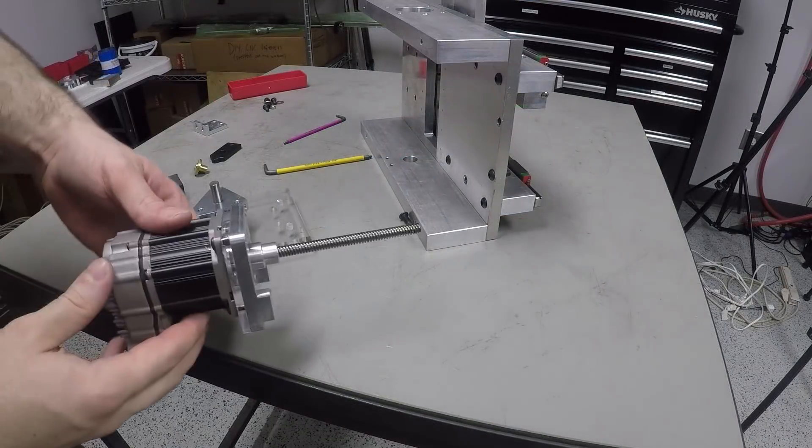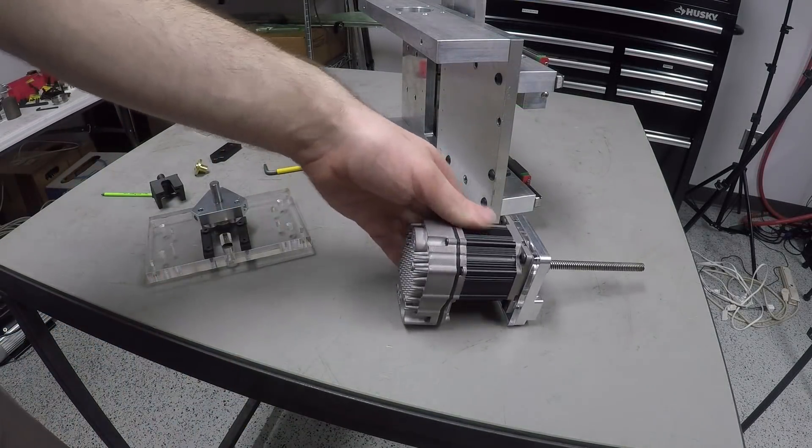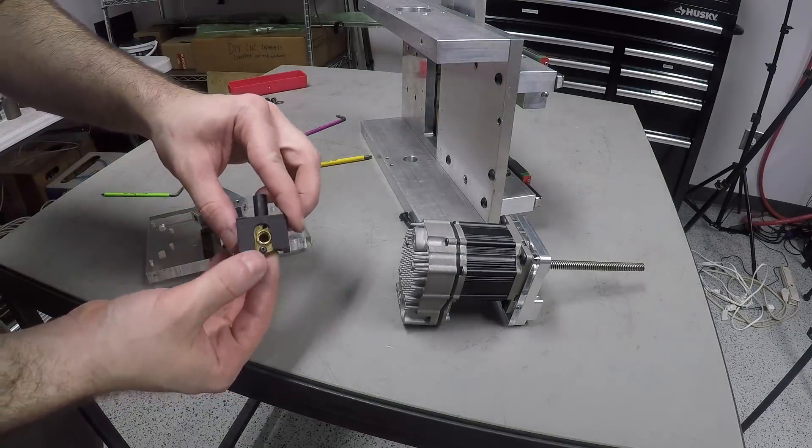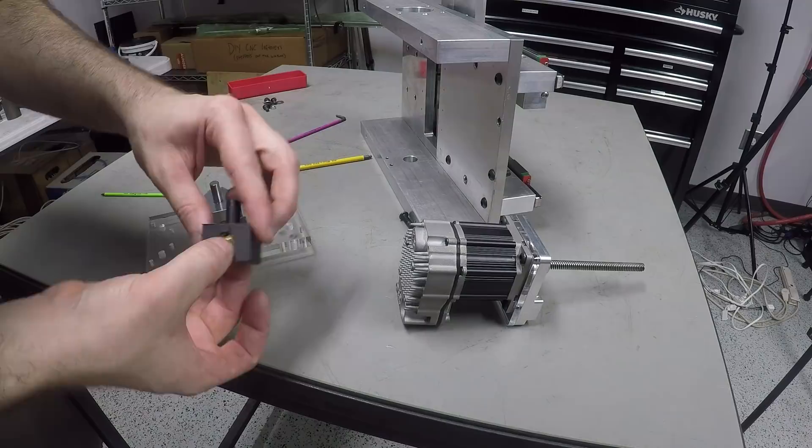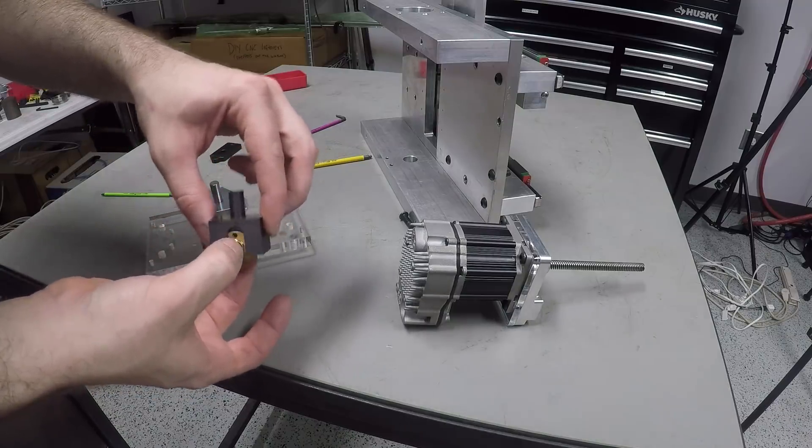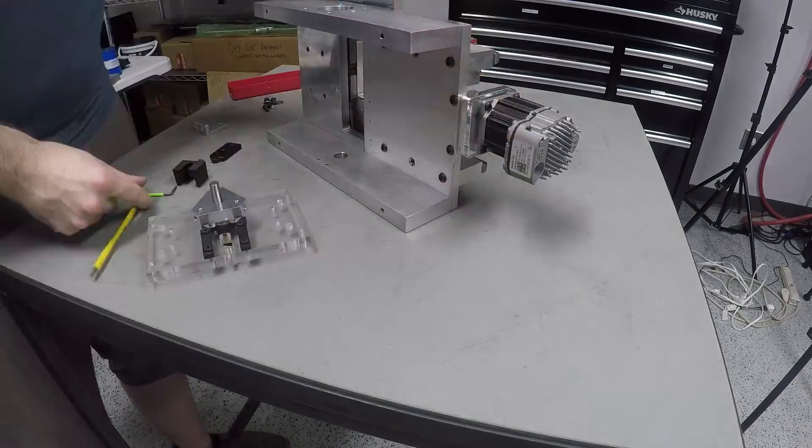The Z-axis precision and backlash requirements on this lathe in particular are practically non-existent. So we just went with a plain old high helix lead screw in this case and made the nut free floating in its housing to allow for any misalignment between the lead screw and the tailstock carriage.